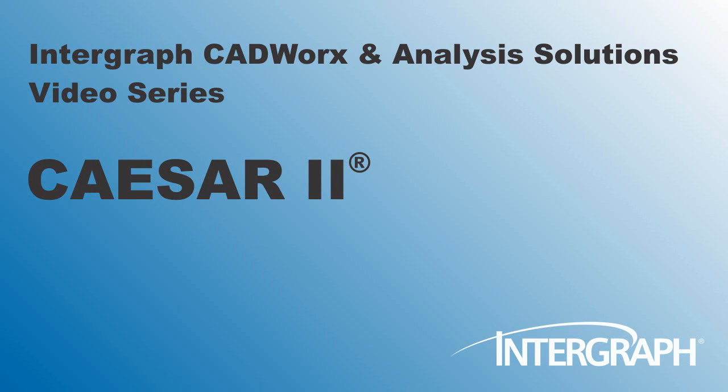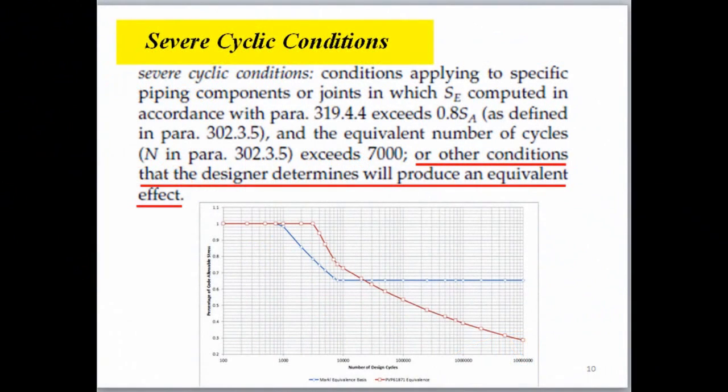Welcome to another in our series of Intergraph CADWorx and Analysis Solutions videos featuring CESAR-2. We mentioned severely cyclic conditions in B31-3. This is something that a few people have a difficult time with because the code talks about other conditions with an equivalent effect.